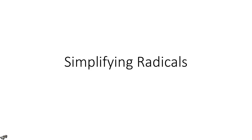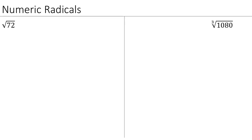Now that we've got the basics out of the way, it's time to talk about what kinds of simplification we can do with radicals. It's not always possible to simplify a numeric radical all the way down to an integer or whole number, but you can often partially simplify them using the rules for radicals.